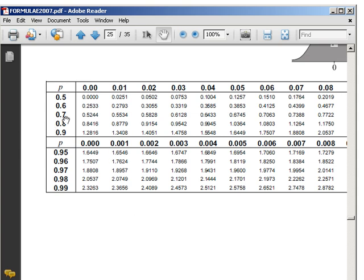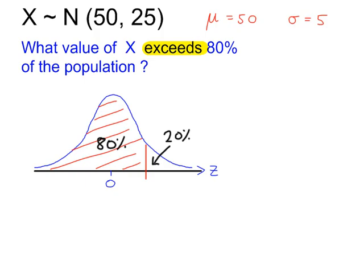The probability we're looking up is 0.8. That gives a z value of 0.8416. So the z value here is 0.8416.